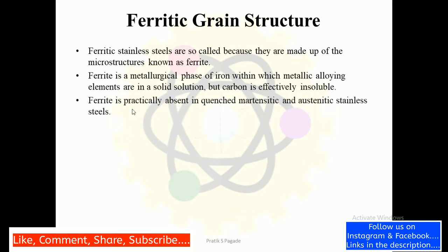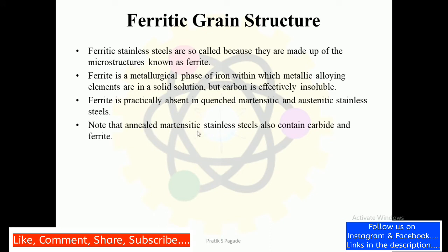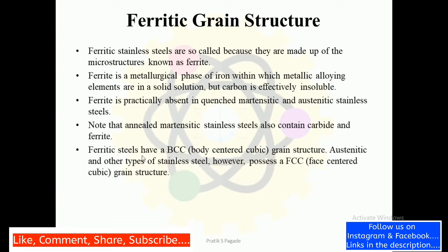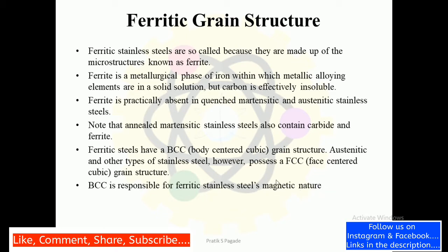Ferrite is practically absent in quenched martensitic and austenitic stainless steels. Note that annealed martensitic stainless steels also contain carbide and ferrite. Ferritic stainless steels have a BCC, body-centered cubic, grain structure. Austenitic and other types of stainless steels possess an FCC, face-centered cubic, grain structure. BCC is responsible for ferritic stainless steel's magnetic properties, as electrons are arranged at the core of the metal's grain.